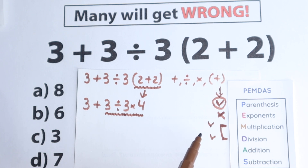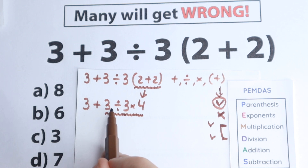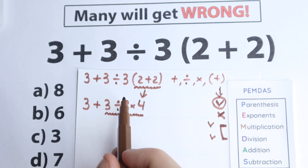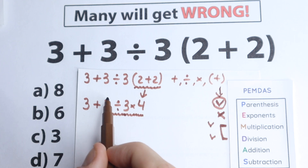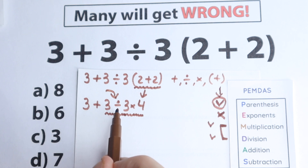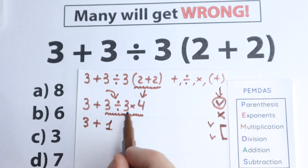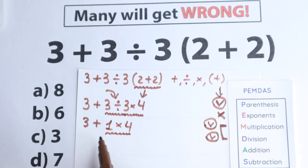We have both multiplication and division, so the main question is: what do we do first — multiply or divide? All over the world people discuss this step. But according to PEMDAS, we need to go from left to right — so whichever sign appears first from left to right, we do that first. Here, the first sign from left to right is division. So we do 3 divided by 3 which equals 1, giving us 3 plus 1 times 4. We then complete the multiplication: 1 times 4 equals 4.